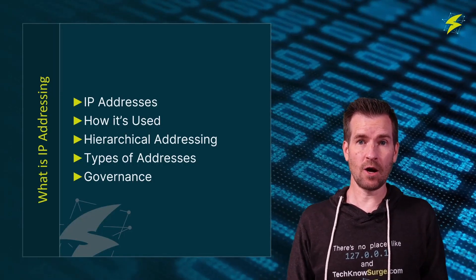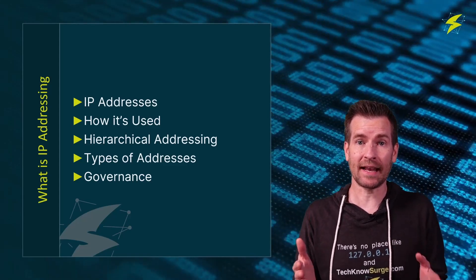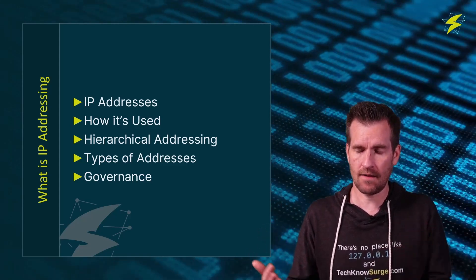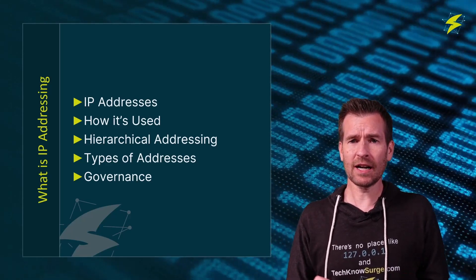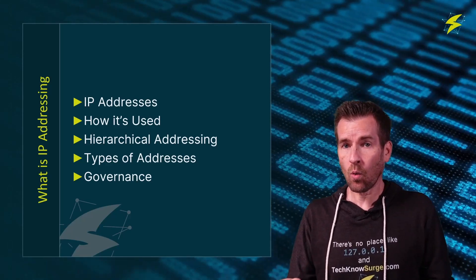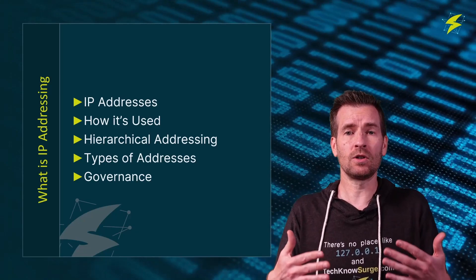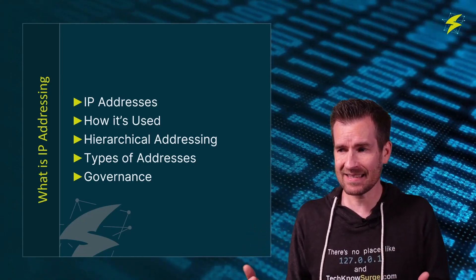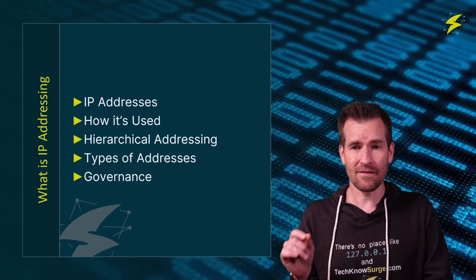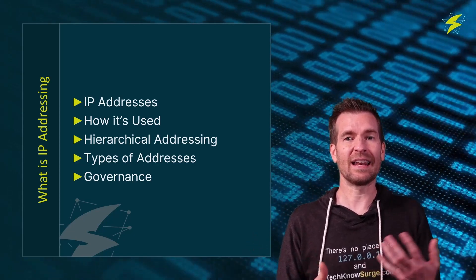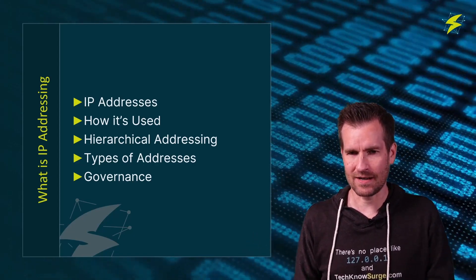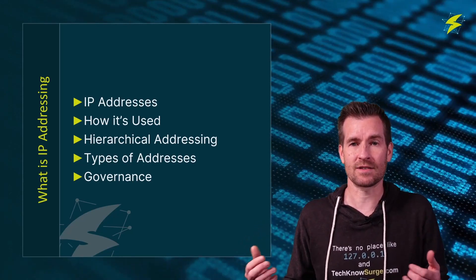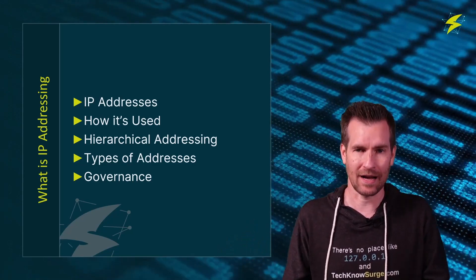In this video we'll start out by just taking a look at an IP address and identify parts of the IP address. Then we're going to talk about how it's used. We'll get into what's called hierarchical addressing, which is what IP addressing is. We'll talk about types of addresses and then we'll get into some governance of addresses, or who administers these different addresses or hands out different address ranges.